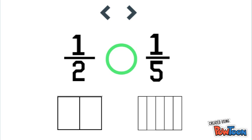So we make one half and then we shade in one of our halves because the numerator is one. Then we make one fifth by using our model and making it into fifths and we shade in one of our fifths.